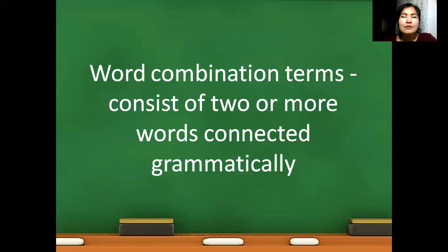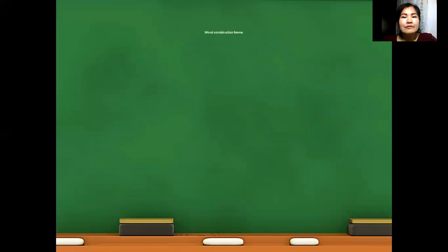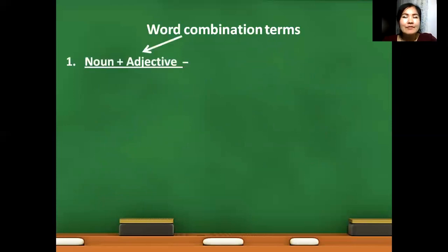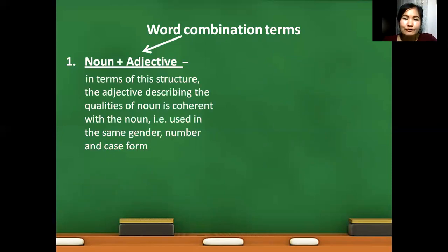Second type of clinical term: word combination terms, which consist of two or more words connected grammatically. According to grammatical connection, word combination terms are divided into two types. First type: word combinations having structure noun plus adjective, where adjective which is describing noun is fully agreed with noun. And it means that adjective is used in the same gender, number, and case as noun.